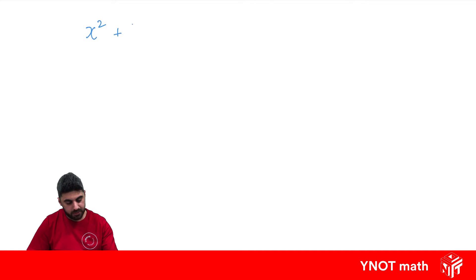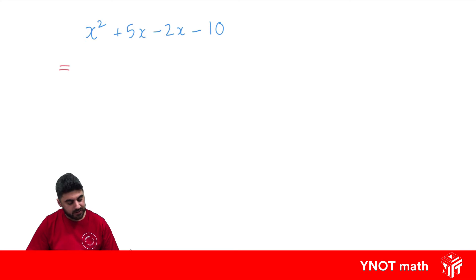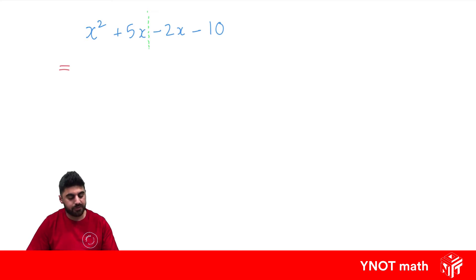Let's look at x squared plus 5x minus 2x minus 10. Obviously I probably could add these two terms together and then just factorize with a normal monic quadratic, which we looked at in the previous video, but let's have a go at factorizing by grouping in pairs. What that involves is splitting up our terms into two and just looking for common factors in each pair.